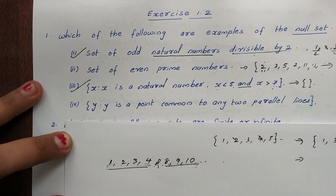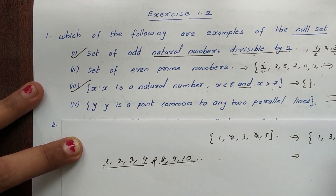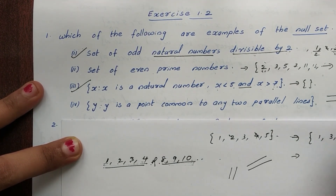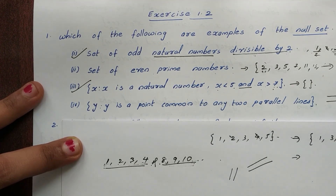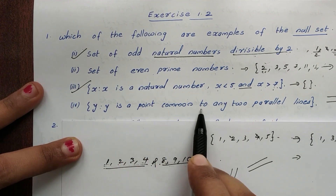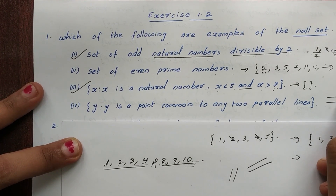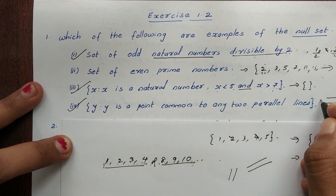Why is a point common to any two parallel lines? Parallel lines never meet. There is no common point, so the set of points common to two parallel lines is the null set.